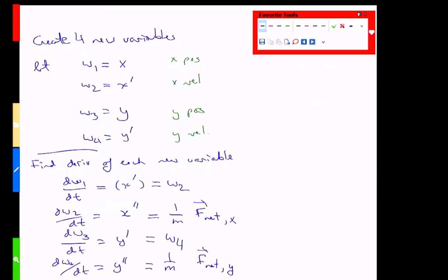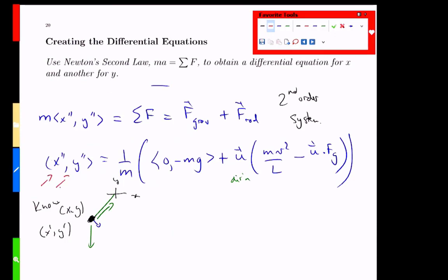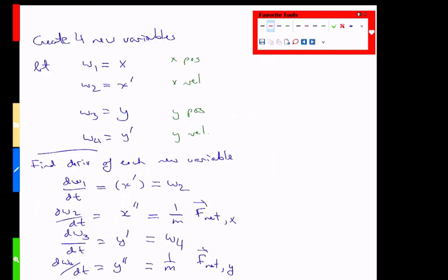To do that, we have to use four variables, because we need a first-order system. And if I go back a second, these guys are, of course, second-order derivatives. So, we do this invention of new variables that I introduced or reminded you of last class, which is we're going to invent four variables, and two of them are going to be really boring.